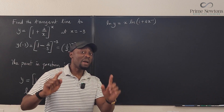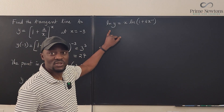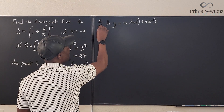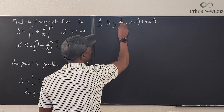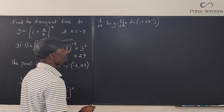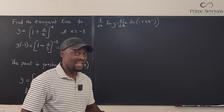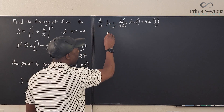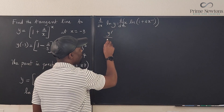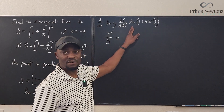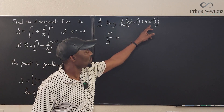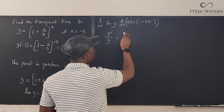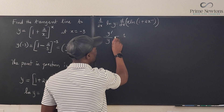Now let's differentiate. Differentiation here will have to be implicit because y is still the argument of a function, so we differentiate both sides with respect to x. On the left-hand side, the derivative of ln(y) gives y prime divided by y. On the right-hand side, we clearly have a product, so we apply the product rule: differentiate the first and keep the second — that gives 1 times the natural log of 1 plus 2x to the negative 1 — plus keep the first and differentiate the second.